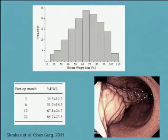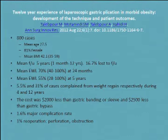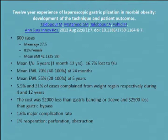The surgeon with the largest experience in the world with plication is probably Dr. Talapur from Iran. He initially presented 150 patients with four-year follow-up — at three to four years he's seeing 50–55% excess weight loss. He subsequently published a much larger series of 800 cases with follow-up out to 12 years, showing a mean excess weight loss of around 70% short-term, decreasing to about 55% at five years. At long-term follow-up, about a third of patients were unhappy with their weight loss.